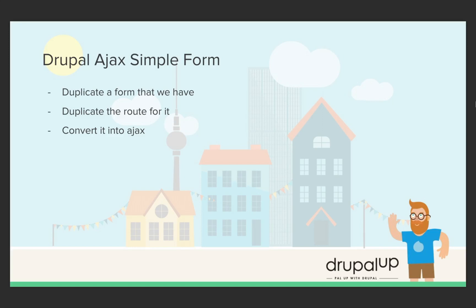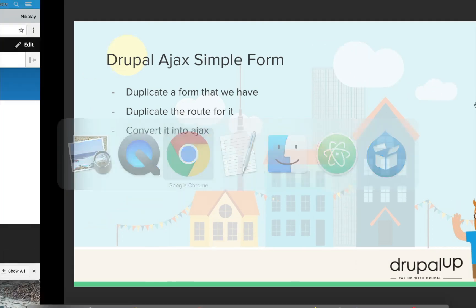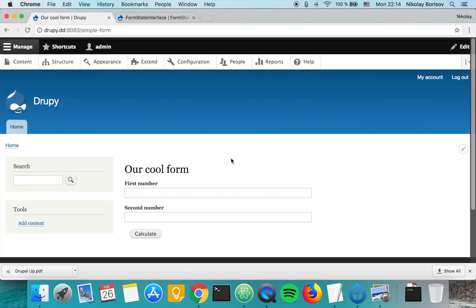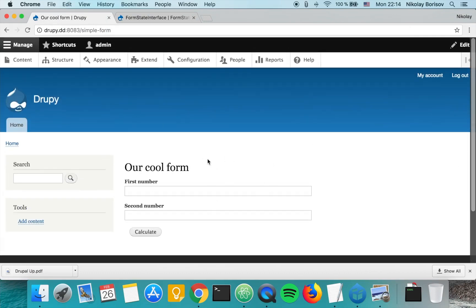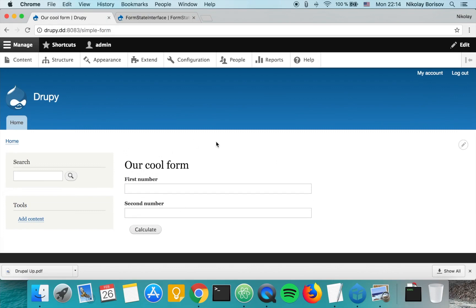In this video we're going to be creating a Drupal Ajax simple form. We're going to duplicate a form that we created in the previous video, duplicate the root of it so that we have another instance with its own root, and we're going to convert it into Ajax. In our Drupal instance we already have the module with the non-Ajax form, so we want to create another form triggered by Ajax — without reloading the page.